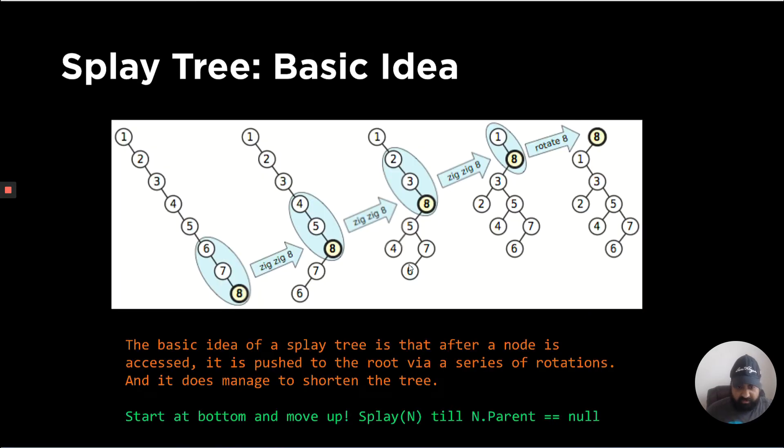So again, just to sum up, the basic idea is that after the node is accessed, it is pushed to the root via a series of rotations. And it does manage to shorten the tree. We don't want to make sure the height is longer now. We want to shorten the tree's height after this operation.